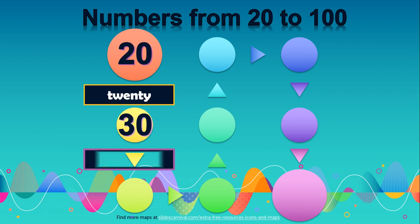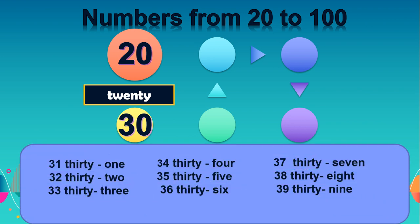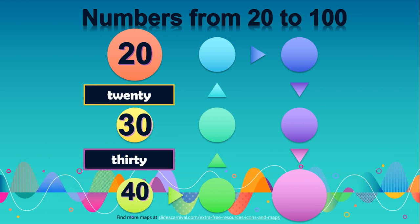Thirty: T-H-I-R-T-Y. Thirty. So the same goes to 30 till 39: 31, 32, 33, 34, 35, 36, 37, 38, and 39.